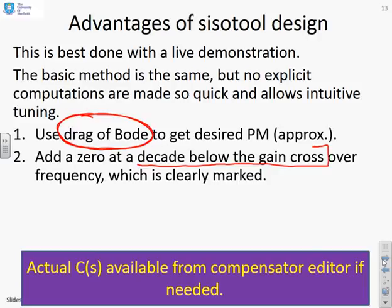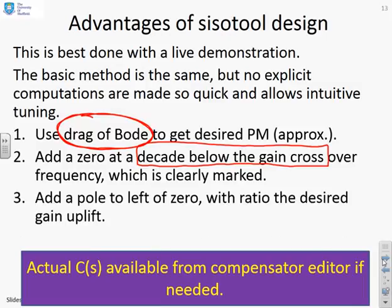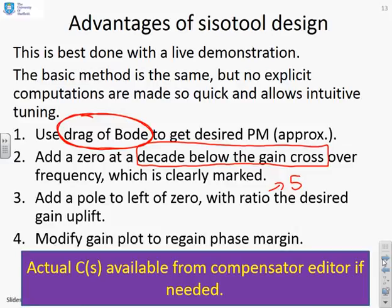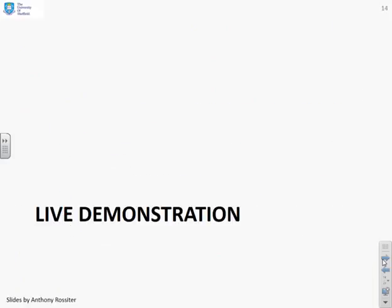Next, add a zero a decade below the gain crossover frequency—you can see the gain crossover frequency on the plot, so adding a zero a decade below is straightforward. Then add a pole to the left of the zero, where we want the ratio to be five. As long as you can see where the pole is, you can add a zero which is a ratio of five less. Finally, modify your gain plot again using drag to get your phase margin back to about 60 degrees. This compensator is pretty much the compensator that you wanted. We'll give a live demonstration.